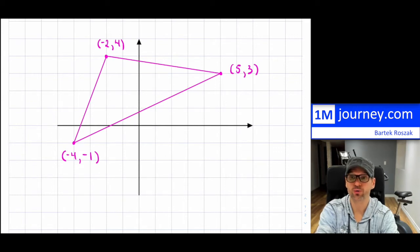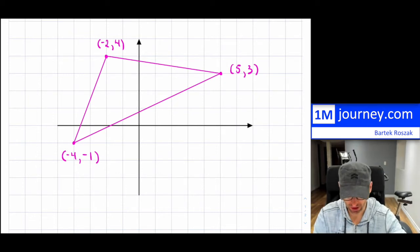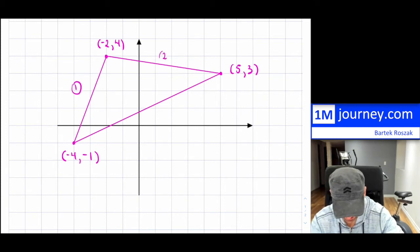So how do we construct something like that? I'm going to show you in this particular video. The first step is I'm going to find the midpoint of each line segment. That's the first thing we're going to find. I'm going to label these — so let's say this is line number one, line number two, line number three.